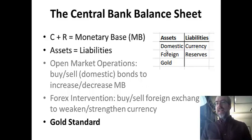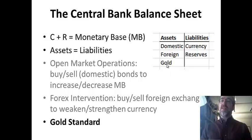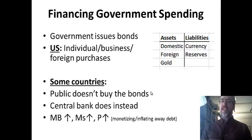You can print bonds and buy them, but obviously you cannot print gold and buy it. So gold is much more fixed in terms of how much it can affect the money supply.